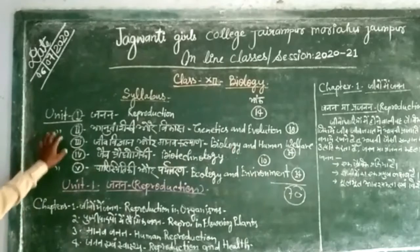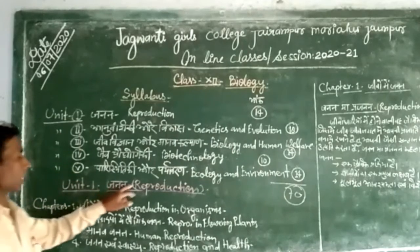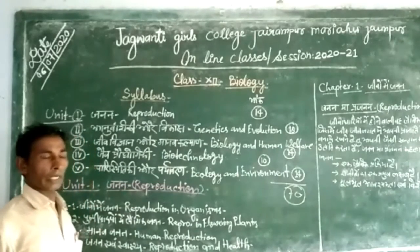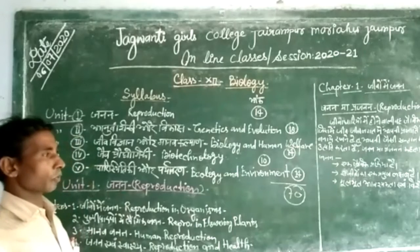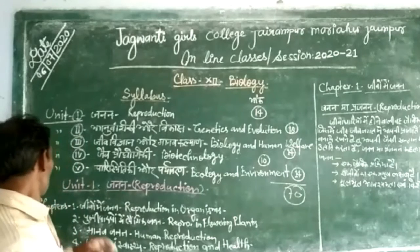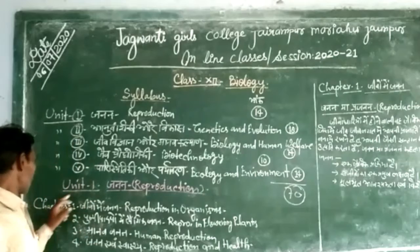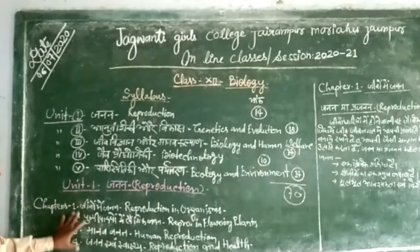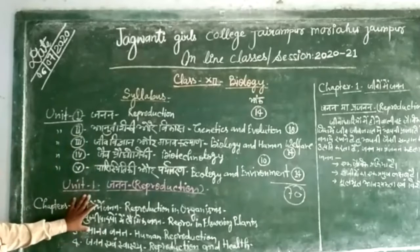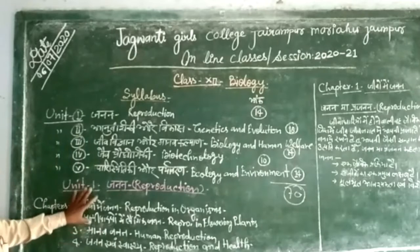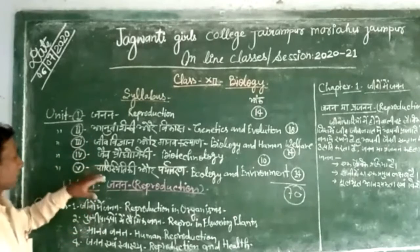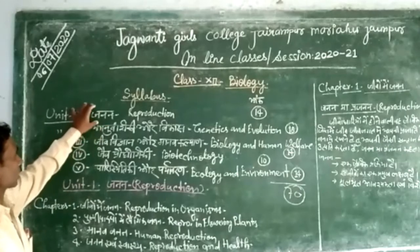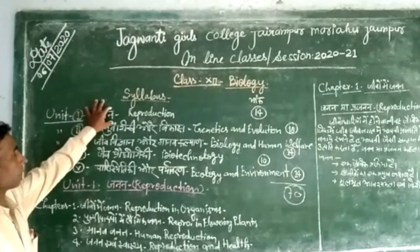In the 5 units, the first unit is general reproduction. In the first unit, you have 4 chapters.